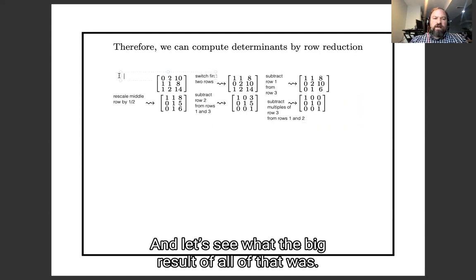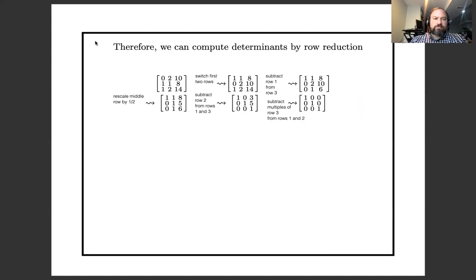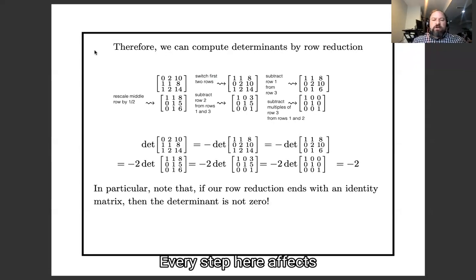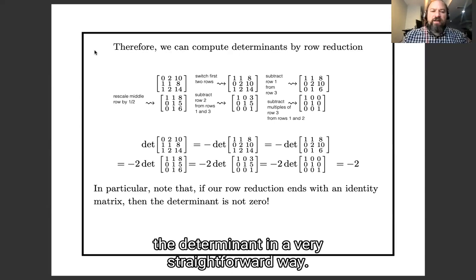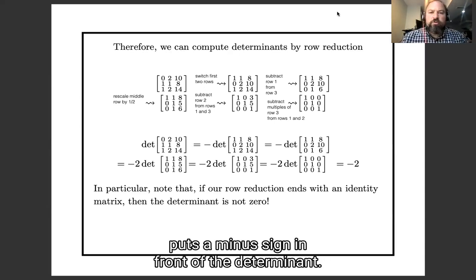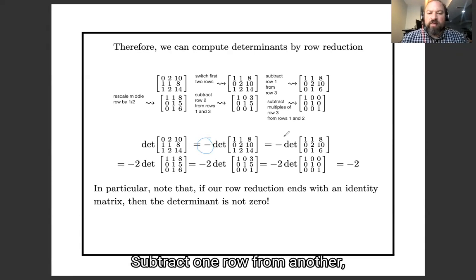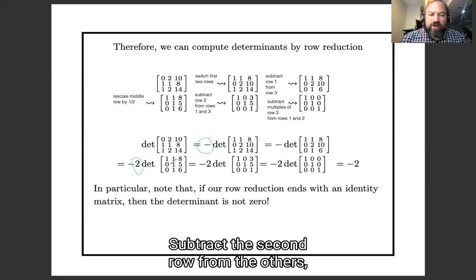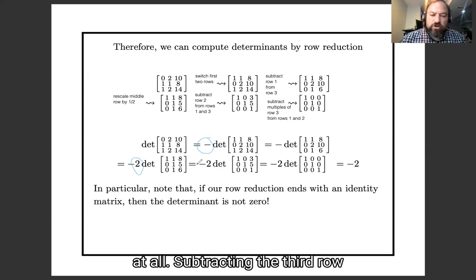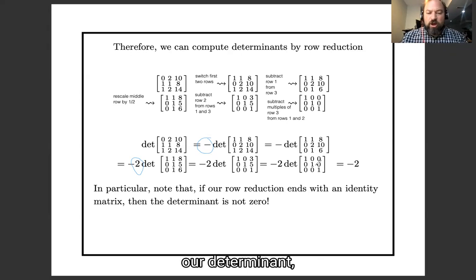And let's see what the big result of all of that was. Every step here affects the determinant in a very straightforward way. So switching the two rows puts a minus sign in front of a determinant. Subtracting one row from another doesn't change the determinant at all, stays exactly the same. Pulling out this factor of 2 pulled out a factor of 2 in the front. Then subtracting the second row from the others didn't change the determinant at all. Subtracting the third row from the others didn't change the determinant at all. At the end of the day, we get to conclude that our determinant... Oh, and the determinant of the identity matrix is 1. That's the first property I told you. So at the end of the day, our determinant is negative 2.